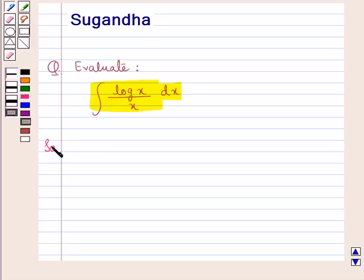Let's proceed with the solution now. We suppose let I be equal to the integral log x upon x dx. And we are supposed to find the value of this I. For this, we suppose let log x be equal to t.